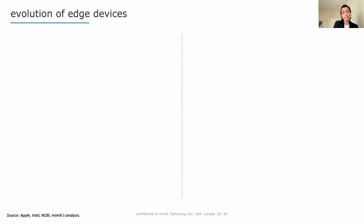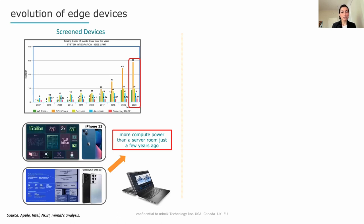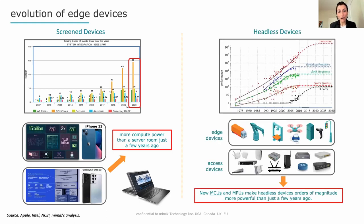Let's look at the evolution of these edge devices. Looking at this graph, you can see that year over year these devices are becoming more and more powerful in terms of memory, processing power, and storage. Just taking iPhone 13 or Samsung Galaxy as an example, it's pretty much a server in your hand — it has more compute power than a server room had just a few years ago. And when you look at headless IoT devices, you see the same trend: the MCUs and MPUs of these devices are orders of magnitude more powerful than they were just a few years ago. These devices are becoming increasingly capable in terms of processing power.